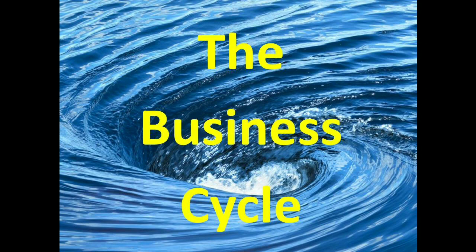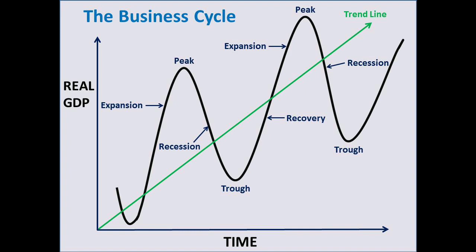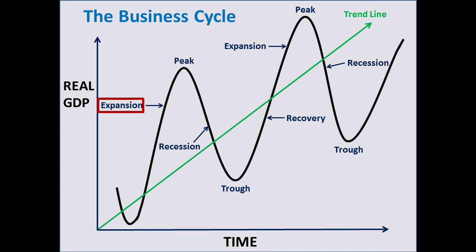Very briefly, before we get into the two economic predictions, we want to touch on the business cycle, otherwise known as the economic cycle. The vertical axis of this chart is the real gross domestic product of the country — the total value of goods produced and services provided in a country during one year. The horizontal axis is the flow of time. The business cycle consists of several phases, starting with the expansion phase, which is the phase the United States has been in for several years, characterized by increases in employment, incomes, production, sales, and booming investments.